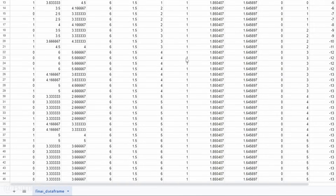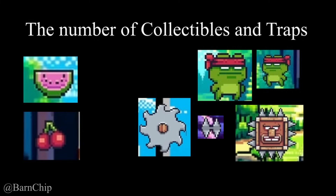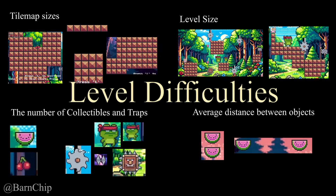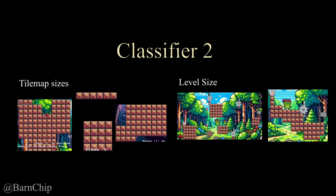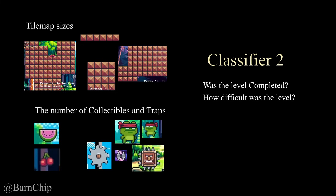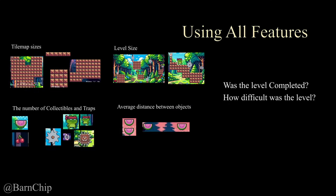If I have some gameplay data for various levels — such as tilemap sizes, the level size, the number of collectibles and traps, and the average distance between the objects — and I want to classify which of these values led to what kind of difficulties, then I can make multiple smaller classifiers using a smaller set of features. For example, one classifier could use the average distance between objects and the total number of objects to classify level difficulty; another could use tilemap sizes and the number of collectibles to predict the same. And from using multiple smaller classifiers, we can usually get a much better model than we would have gotten otherwise.